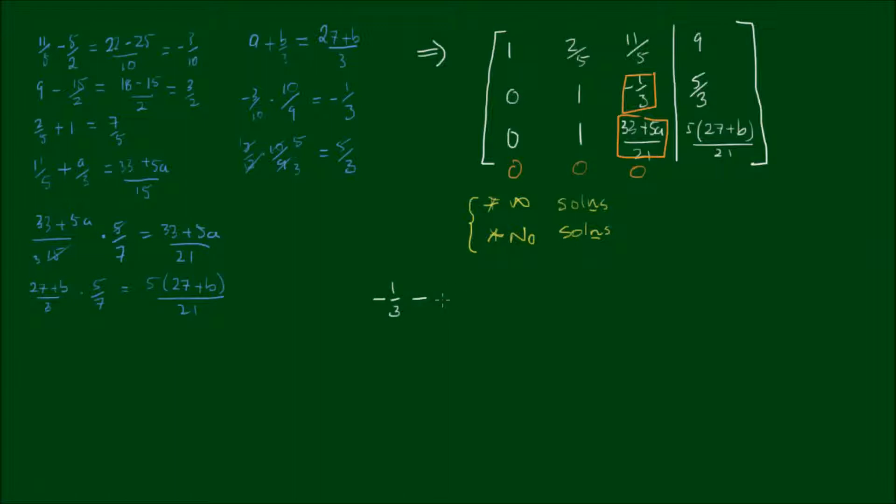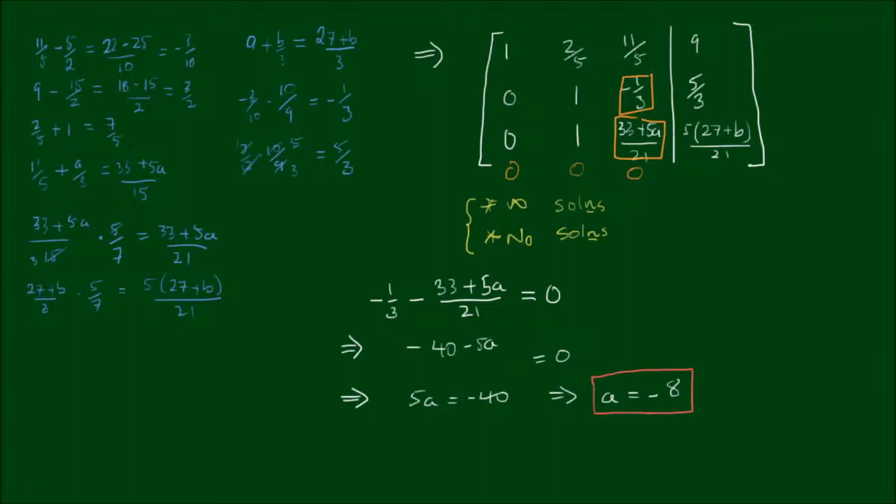So let's do that. Minus 1 third minus 33 plus 5A over 21, we set that equal to 0 and solve for A. The first term becomes negative 7 minus 33 minus 5A all over 21 equals 0. I can multiply both sides by 21. Minus 7 minus 33 is minus 40. So rearranging, we have 5A equals minus 40 and that means A is equal to negative 8. So the value of A for there to be no unique solutions has to be negative 8.